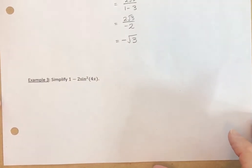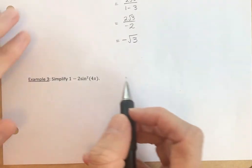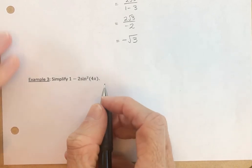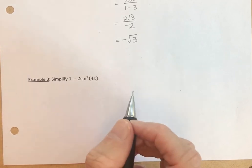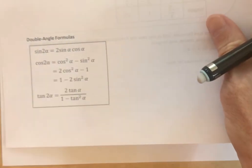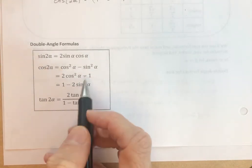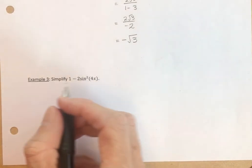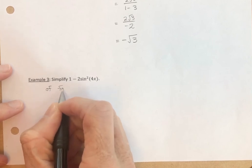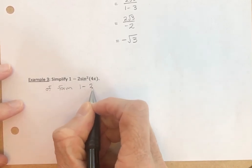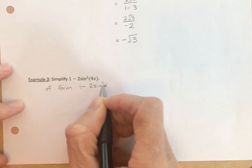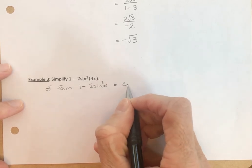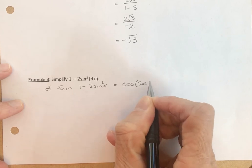One more example: simplify one minus two times the sine of 4x squared. Looking at our cosine double angle forms, this matches the form one minus two sine squared alpha, which equals the cosine of two times alpha.